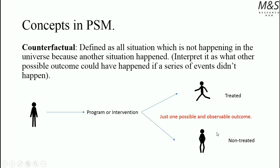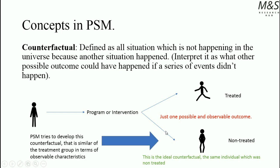However, in reality we cannot measure the non-treated outcome, so we don't know the proper counterfactual. The ideal counterfactual would be the same individual who was non-treated when the treatment was applied. Propensity score matching tries to develop this counterfactual, which is constructed as a statistical comparison group.